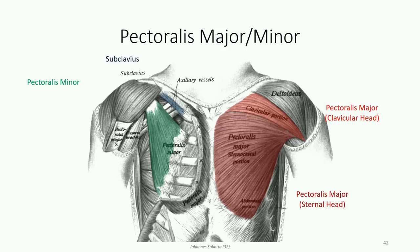Subclavius is an often overlooked muscle. As the name implies, it is found inferior to the clavicle, running at an oblique angle to attach the shaft of the clavicle to the first rib. It serves to slightly depress the clavicle, but is thought to play a greater role in stabilizing the scapula through isometric contraction. Its innervation is probably the easiest you will ever have to learn, as the nerve branch is so small it is simply called the nerve to subclavius.